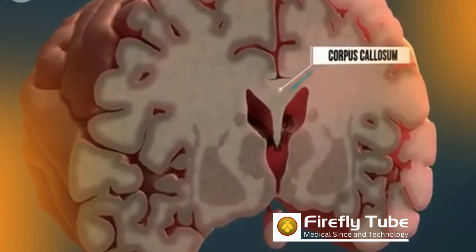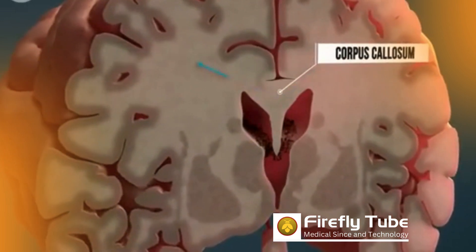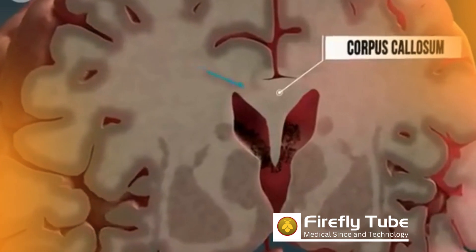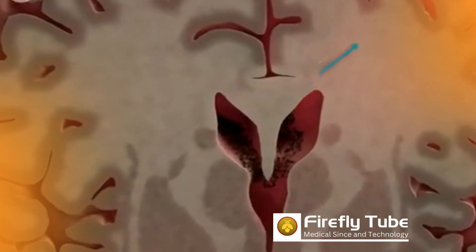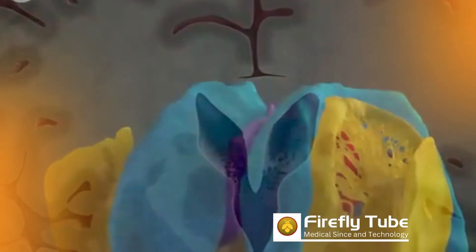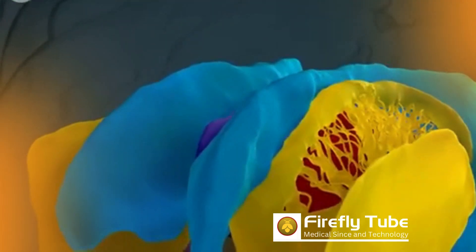The thumb-sized corpus callosum is used for the exchange of information and coordination between the two hemispheres of the brain, so the left hand literally knows what the right hand is doing.